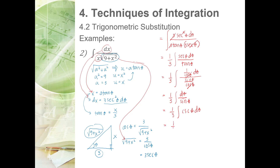The integral of cosecant theta gives one-third ln|cosecant theta minus cotangent theta| plus C. From the triangle, cosecant theta is hypotenuse over opposite side equals the square root of 9 plus x squared over x, and cotangent theta is adjacent side over opposite side equals 3 over x.